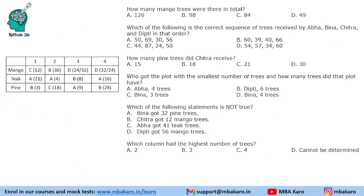Now answering the questions: How many mango trees were there in total? Mango trees = 42 + 56 = 98. Which sequence of trees did Abha, Bina, Chitra and Deepti receive? Abha: 50, Bina: 69, Chitra: 30, Deepti: 56. How many pine trees did Chitra receive? Pine trees for Chitra = 18.